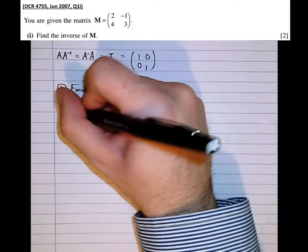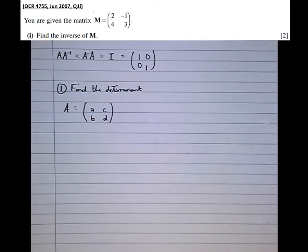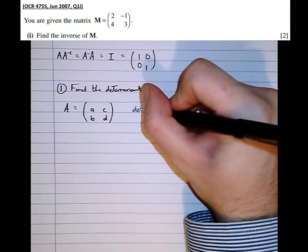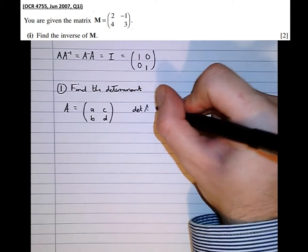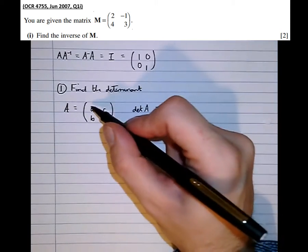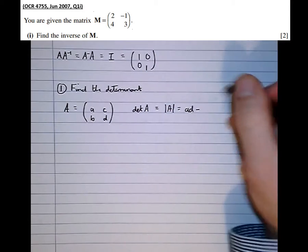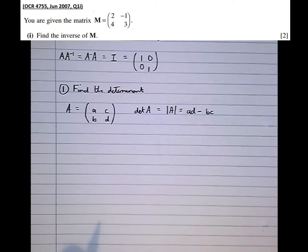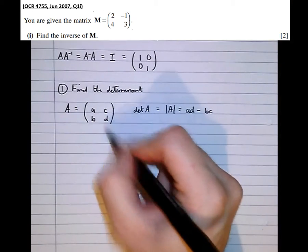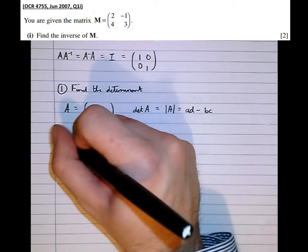So let's say our matrix A is a general 2 by 2 matrix: A, B, C, D. The determinant of A, also denoted as the modulus of A, is equal to AD minus BC — that is, the main diagonal multiplied together, take the other diagonal multiplied together.